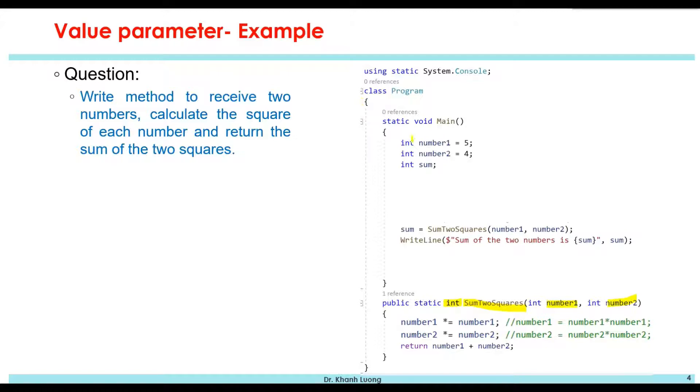Inside the main method, we declare two variables, number1 and number2, and we assign the value for them as well, 5 and 4. Then we call the method sum2square and we pass the value 5 and 4 to the method. So now the value of number1 in the method will be 5, and the value of number2 in the method will be 4.